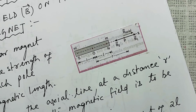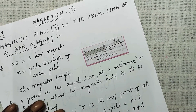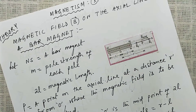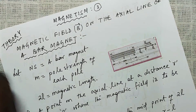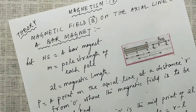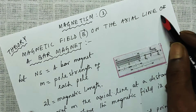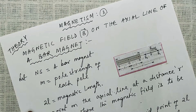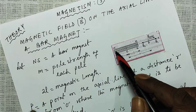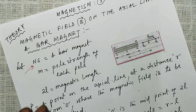Now look at the discussion — very, very simple, it will hardly take six or seven minutes. The magnetic field B on the axial line of a bar magnet: NS, or from S to N, you may write as NS or SN, is a bar magnet.